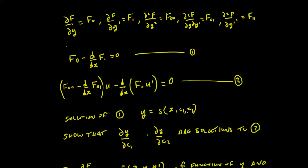So having noted that, what we're going to show is that if we have this solution to the Euler-Lagrange equation, then we can find the solution to the Jacobi-Accessory equation by taking the partial derivative of the function with respect to C1 and the partial derivative with respect to C2. We're going to show that if that is true, then differentiating the Euler-Lagrange with respect to C1 and C2 should give back the Jacobi-Accessory equation, so these will become equivalent.